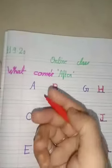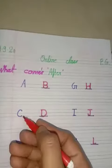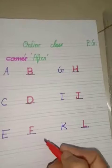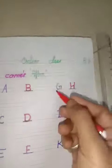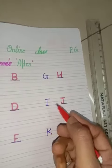Okay. English mein isko hum 'after' bolte hain. A after B. C after D. E after F. G after H. I after J. K after L. Okay.